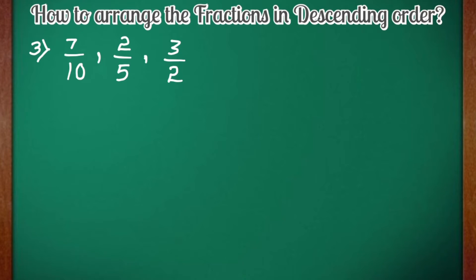Here I have written a group of fractions whose denominators are different and also their numerators are different. Neither the numerators nor the denominators are the same. In this case, we have to convert them into like fractions — we have to make the denominators the same first.